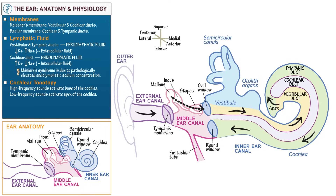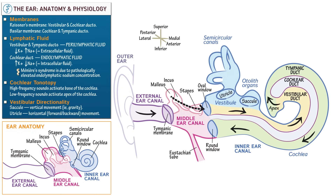Now let's learn about the major vestibular components of the ear: the otolith organs and the semicircular canals. Within the vestibule, indicate the saccule, which detects vertical movement meaning gravity, and the utricle, which detects horizontal forward-backward movement. Finally, shade in the semicircular canals — horizontal, posterior, and anterior. They lie perpendicular to one another and detect rotational acceleration, which we address elsewhere.